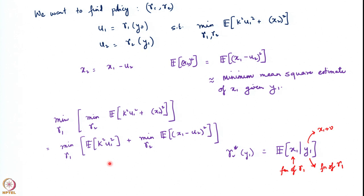Gamma_1 is trying to do two things. It has its own business which is to minimize the particular cost term — it directly influences the action, since u_1 is just gamma_1 of y_0. But it also influences what happens in the next stage, because it appears there as well. So gamma_1 is doing a compromise between minimizing its own stage-wise cost and influencing what is going to happen downstream.